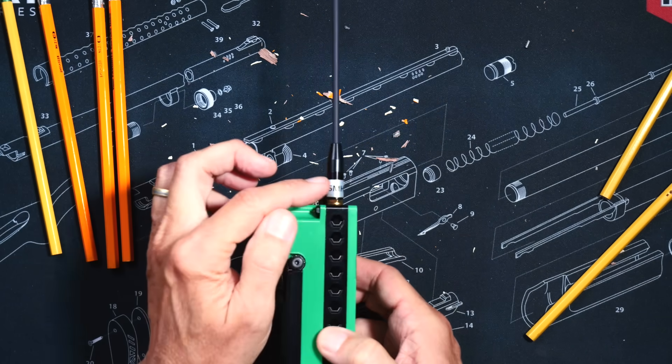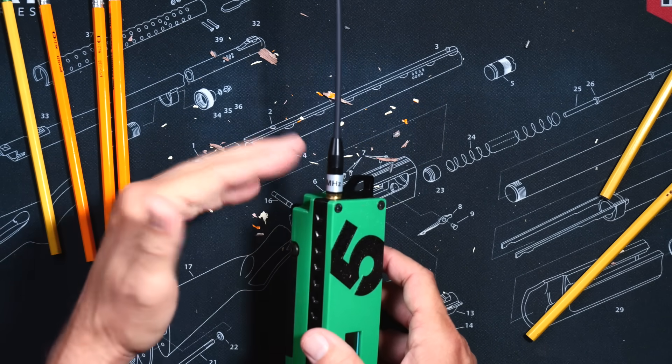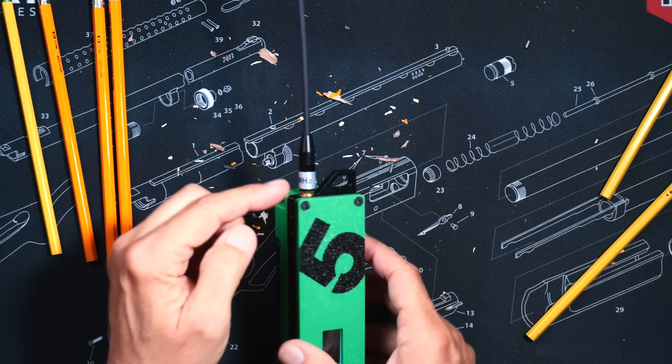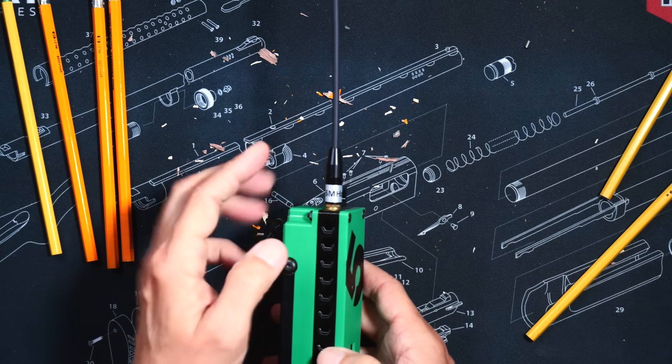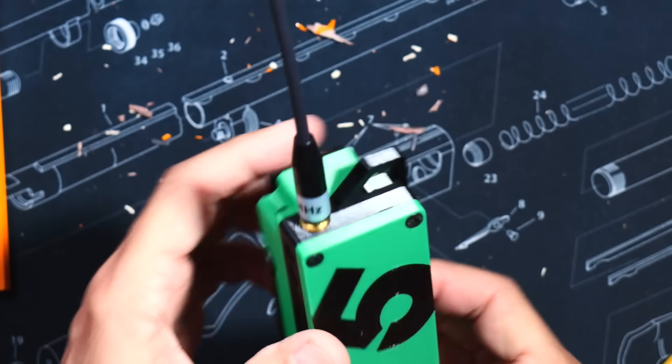The antenna that comes with it is tuned for the Mesh-tastic frequency in the United States. And if you buy a larger antenna, you do have to make sure that it is made specifically for that frequency, which in these United States is 915 MHz.